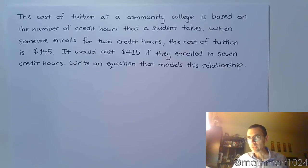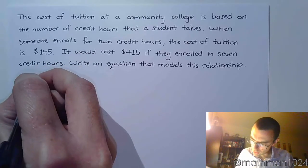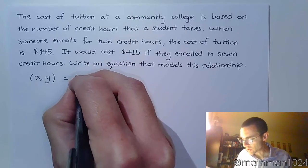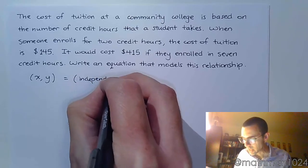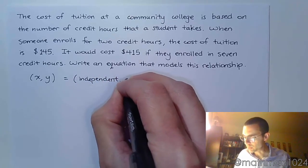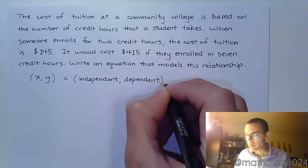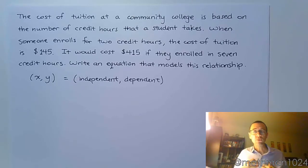To do that, we need to understand what ordered pairs look like. So typically, we do X and Y. The X, in case you have forgotten, X is what we call the independent variable, and Y is the dependent variable. So when we say X is independent, that's usually the thing that we have control over. It's the thing that we get to choose. And once we choose that, the Y value then depends on what we chose.